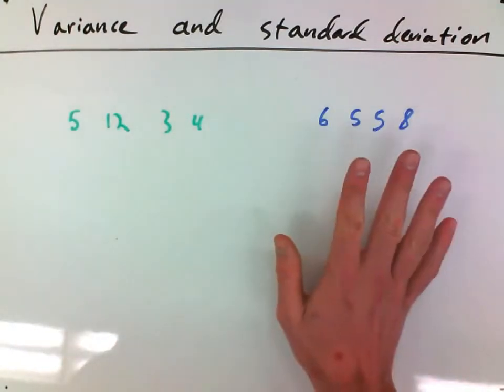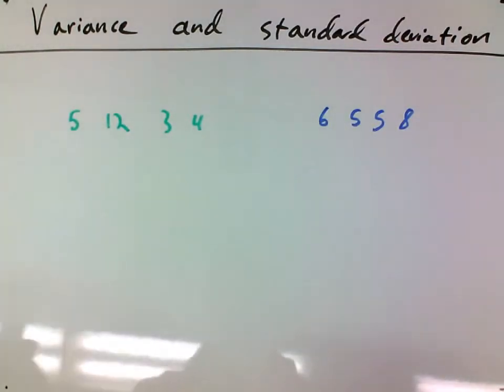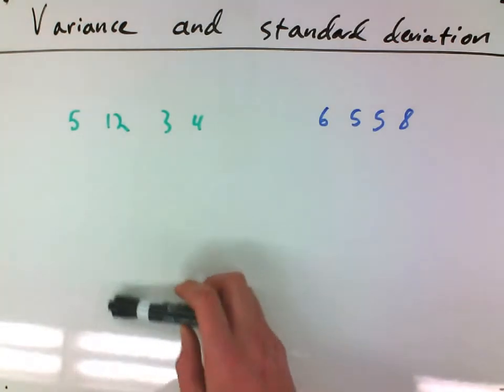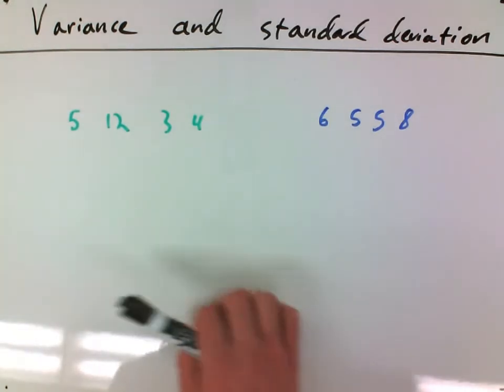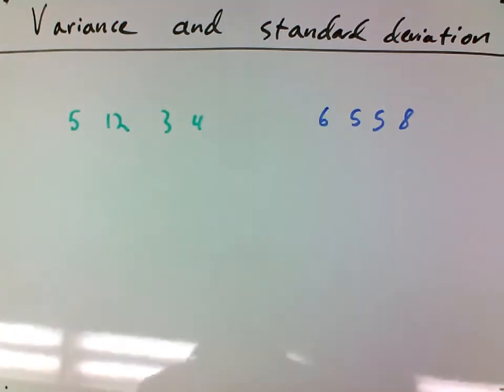So we have two sets of data, the green set and the blue set, and if we look at them, let's say that this is the number of runs given up by a pitcher.